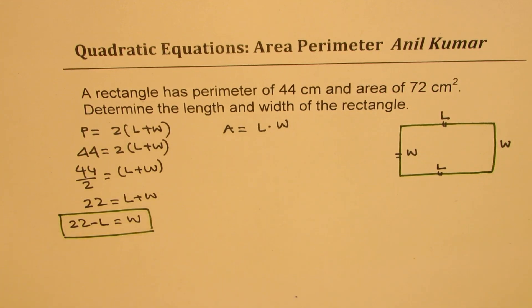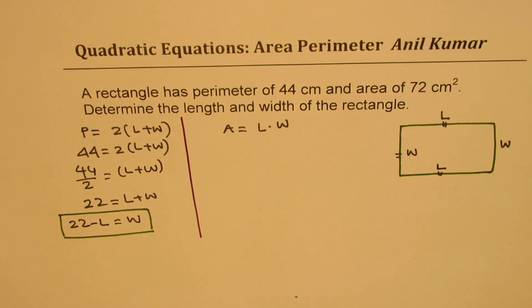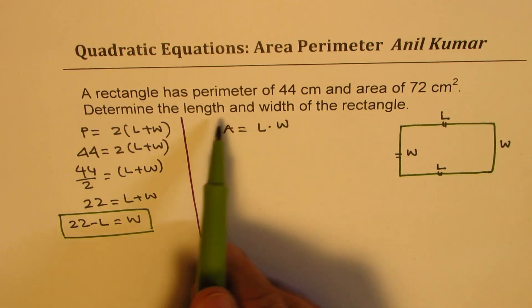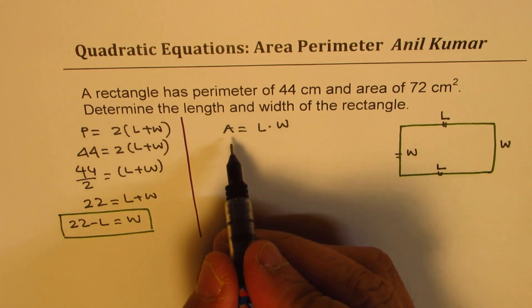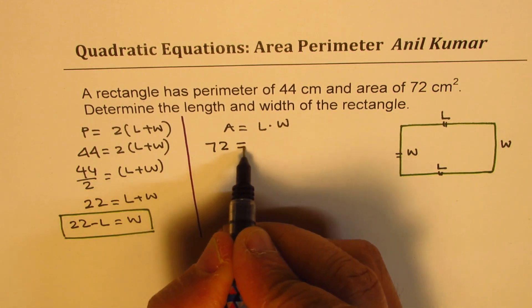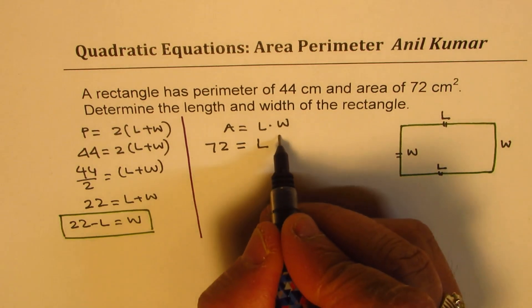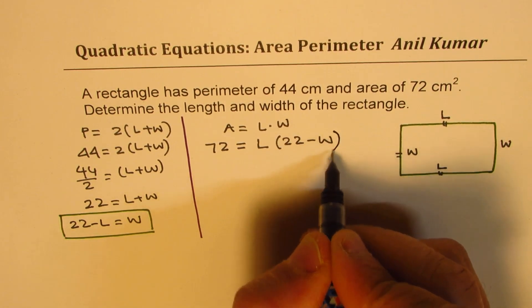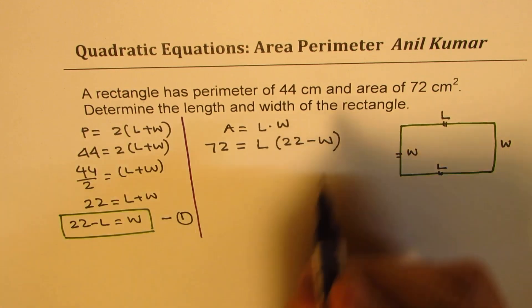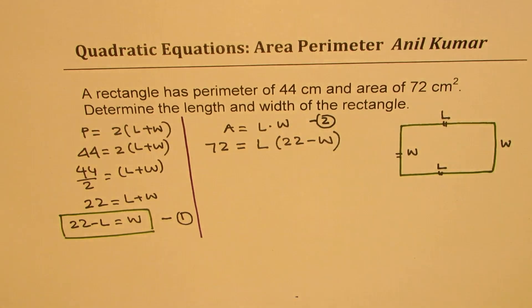Now we know area, which is given to us as 72, and we are also given that length and width, their sum is 22, right? So now we can substitute here and solve. Area is 72 for us. We'll write 72 for area. Length times width - we'll write this expression which is 22 minus L. So we can call this equation 1, and this as equation 2. At this stage we'll substitute equation 1 into equation 2.